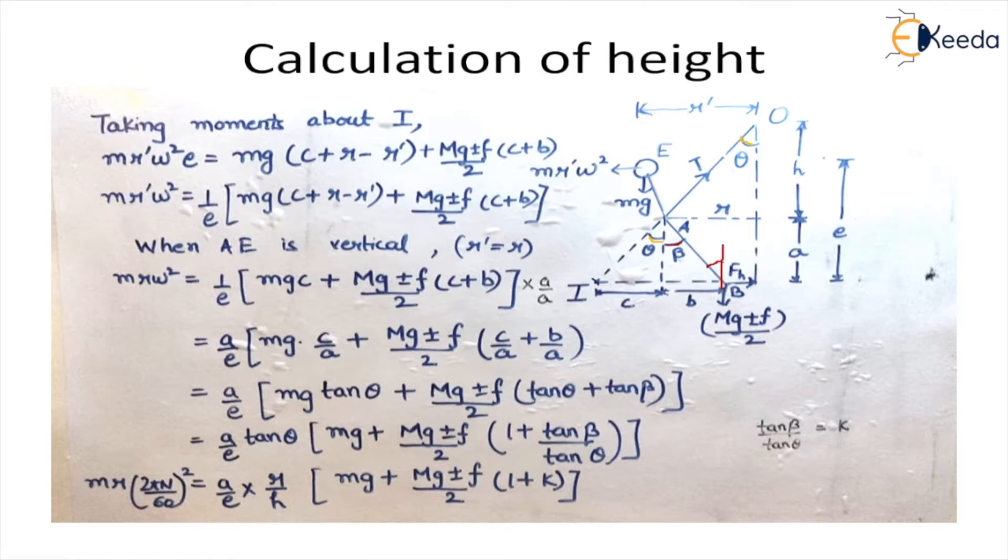And the mass of the load which is capital Mg plus minus F. We have already discussed in earlier lectures that plus minus F means the frictional force because of the dead load. And this value changes depending upon the motion of the load. Which means that when this dead load is moving upward the frictional force acts downward. So it becomes Mg plus F.